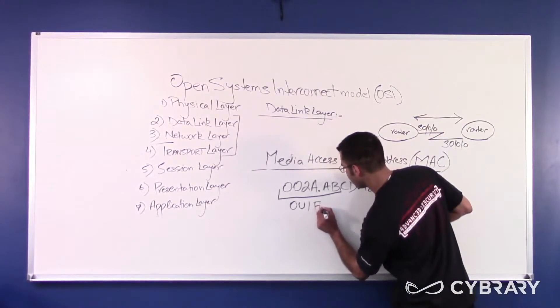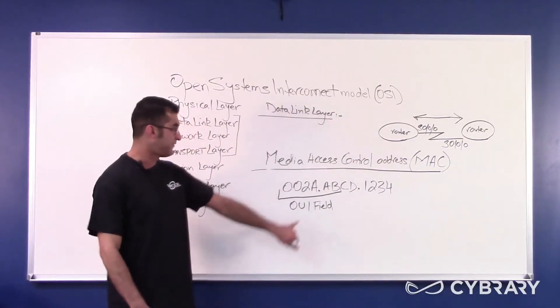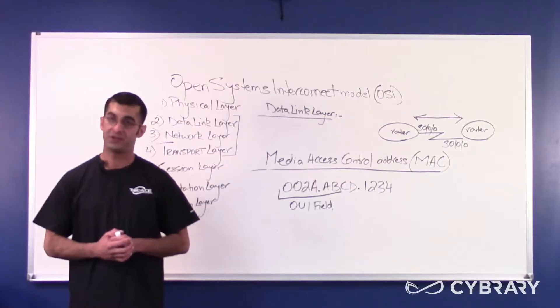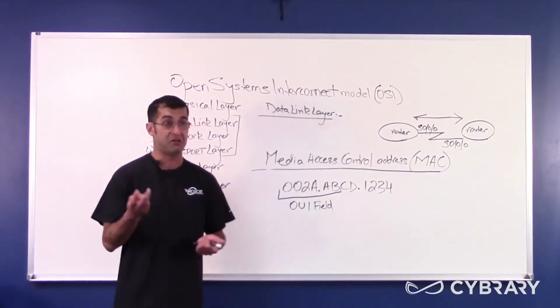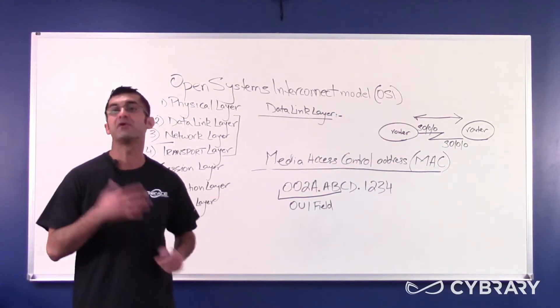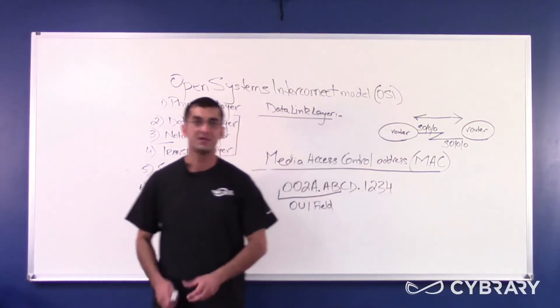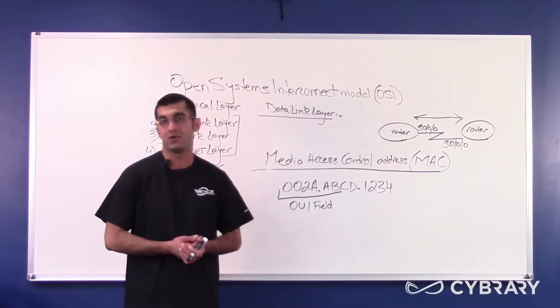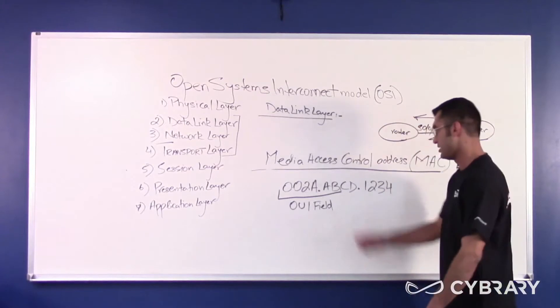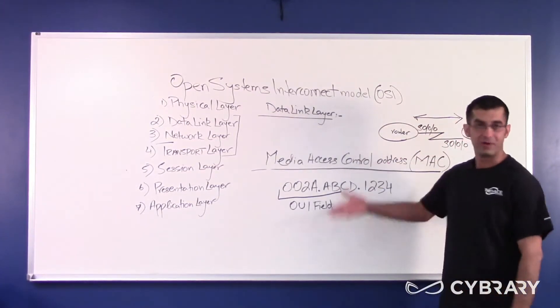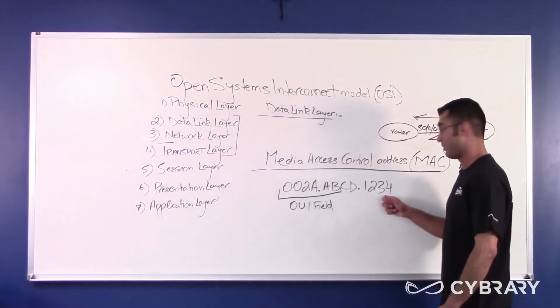The OUI field is designated by a governing body and it cannot be changed. This is vendor specific. Each vendor, for example Cisco, Microsoft, Dell, each one of these vendors are assigned several OUIs and these OUIs cannot be changed. The last 24 bits of a MAC address, the vendor can do whatever they want with them. So the first MAC address created by Cisco ever was probably a vendor specific OUI field and then 0 0 0 0 0 0 0 1, and they went from there.